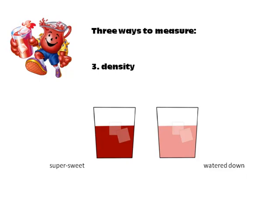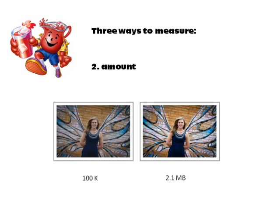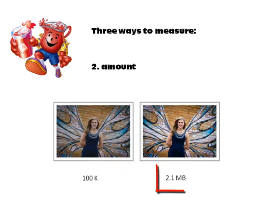The same thing works for photographs. Here's a picture, and we can measure the width and the height — in inches or in pixels — and that gives us the dimensions for a photograph. The second way to measure is to talk about file size, or how many kilobytes or megabytes the photo is. In this case, the images are exactly the same size, but the one on the left is only 100K, while the one on the right is 2 megabytes — a much bigger file, not in width and height, but in file size.